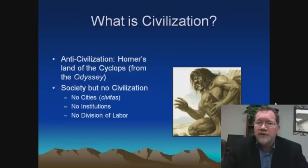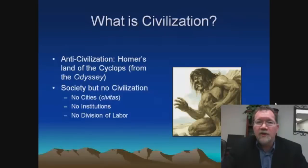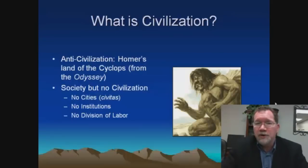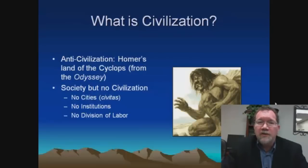The Cyclops have no institutions — no formal ways of associating with each other, no laws, no councils, as the passage says. This has also been considered an important component of civilized life: that there is a certain degree of formality in the way we interact with one another. And then a very important point — the Cyclops do not have a division of labor. There seems to be no specialization. Each one tends animals and gathers nature's bounty, with no social cooperation, no craftsmen, no builders, no artisans. Each one is basically self-sufficient. To the Greek, this was a barbaric way of living.